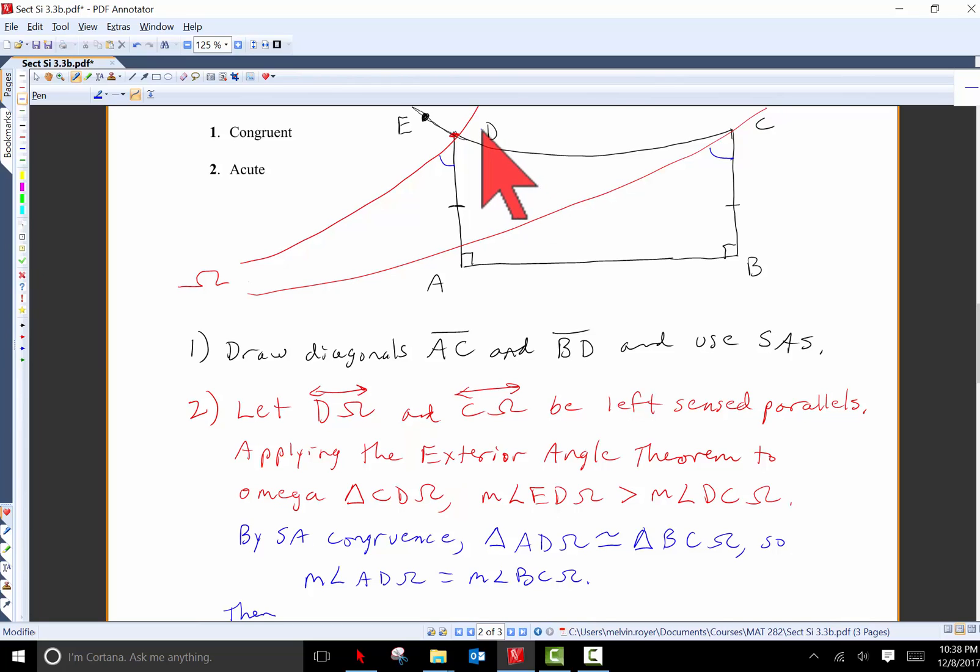Let's prove here that these two angles are acute. So as shown in red, let's draw D omega and C omega to be the left sense parallels to line AB at points D and C. Now triangle CD omega is an omega triangle and so by the exterior angle theorem, angle ED omega, this exterior angle here, is greater in measure than DC omega, the interior angle here.